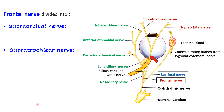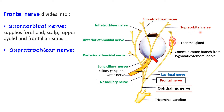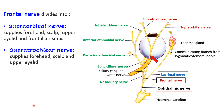The supraorbital nerve emerges above the supraorbital margin — almost at the lower end of the forehead — and supplies the forehead, the anterior part of the scalp, the upper eyelid, and the frontal air sinus. The supratrochlear nerve also supplies the same structures: the forehead, anterior part of the scalp, and the upper eyelid.